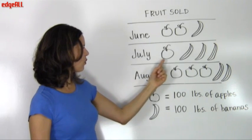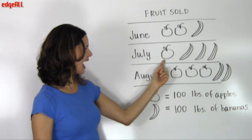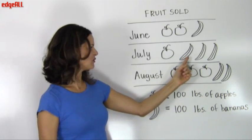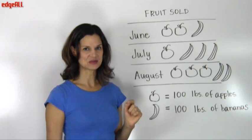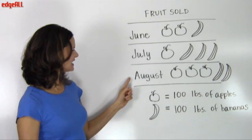In July, 100 pounds of apples were sold, and one, two, three hundred pounds of bananas were sold.